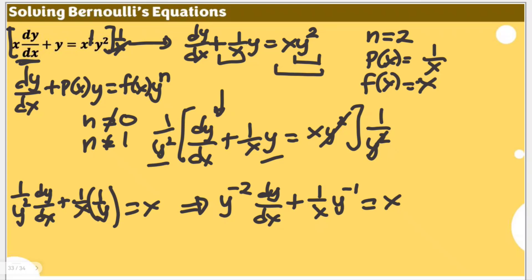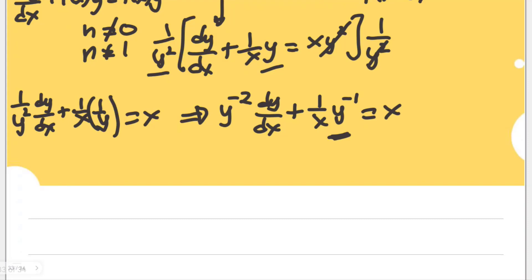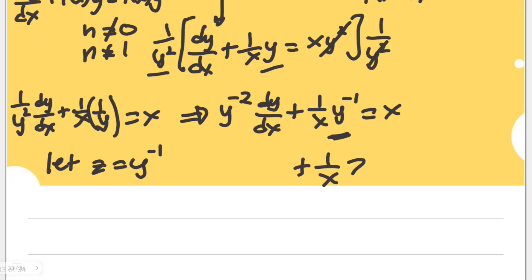Since this cannot be solved as a linear equation, we need to represent this function as another variable with an exponent of 1, because if the exponent is 1, it can be written as a linear equation and we can use linear equation concepts to solve it. Let z equal y to the power of negative 1. This means the equation becomes dz/dx plus (1/x)z equals x, and we are almost there getting the equivalent linear equation in terms of z.